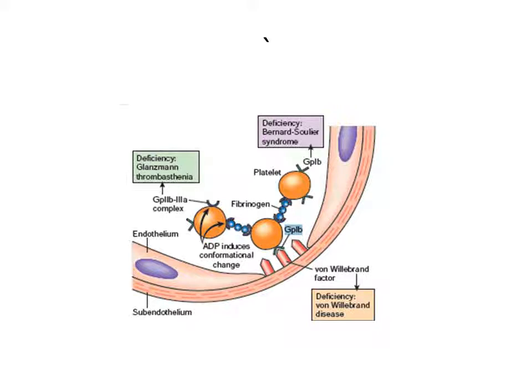Attachment of platelets with other platelets is known as aggregation of platelets. Attachment of platelets to non-platelet surfaces is known as adhesion of platelets. If von Willebrand factor is deficient or GP1B is deficient, this results in defective adhesion — seen in Bernard-Soulier syndrome or von Willebrand disease. If the GP2B3A complex receptor is deficient, there will be defective aggregation of platelets, and the disease is known as Glanzmann's thrombasthenia.